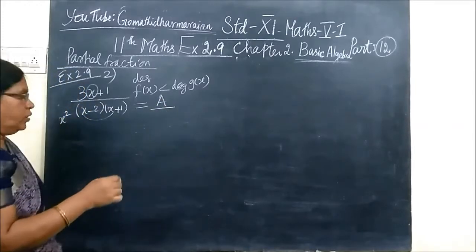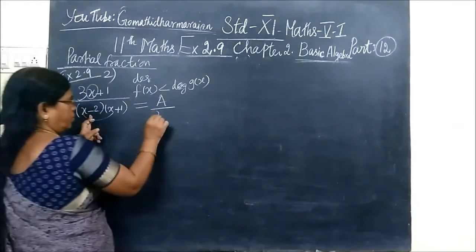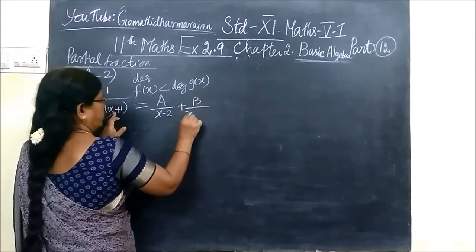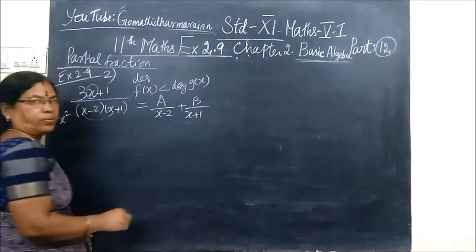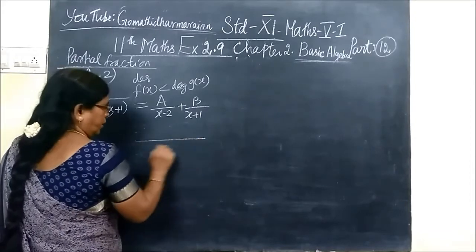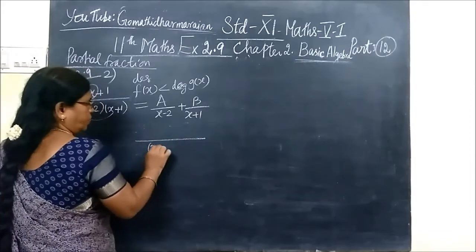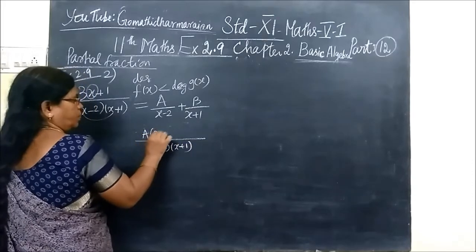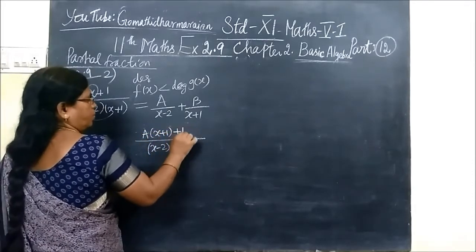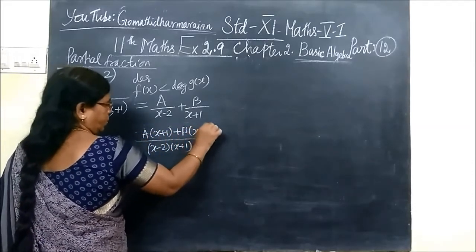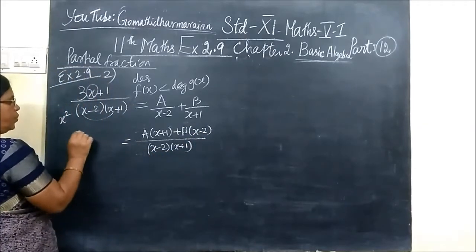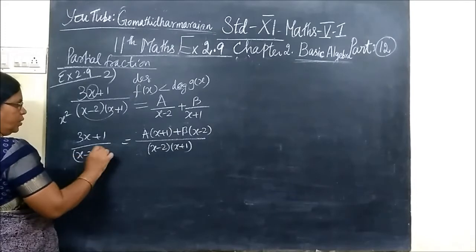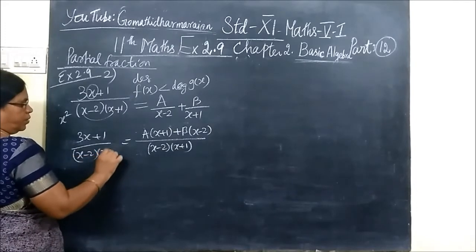Type 1: one constant by x minus 2 plus another constant by x plus 1. Now take the LCM. So x minus 2, x plus 1 cross multiplied. Then the sum is 3x plus 1 by x minus 2, x plus 1.